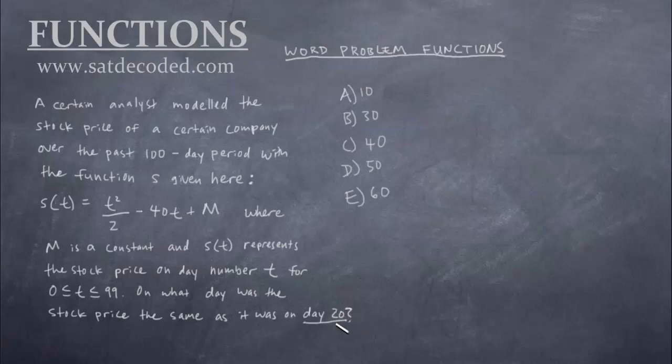This question is actually a two-step question because it's asking us on what day, so on what other day was the stock price the same as it was on day 20? So we need to first know what the stock price was on day 20 before we can figure out anything else. So day 20, well right here it says day number t. So we know 20 in this case is our t. So let's go ahead and write that down, t = 20. And this whole formula right here, I'm not going to rewrite it this time, that's our function. We're looking for s(20) right now.